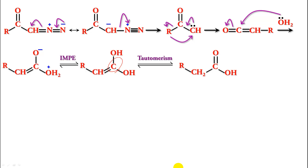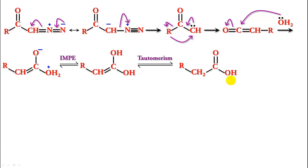Now, if instead of water we had used alcohol, the only difference would be that the OH would actually be OR. So if we treat the ketene with alcohol, we get an ester.